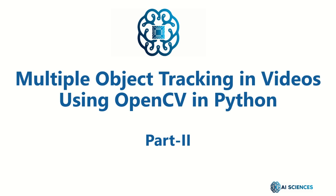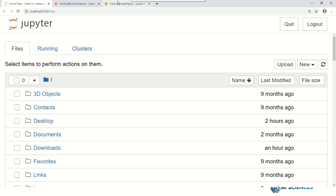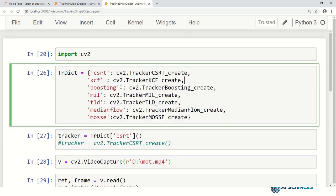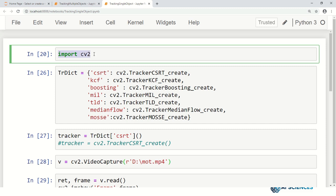Let's see the coding. It is much similar to how we track a single object with a little modification, so we'll be referring to the code from Part 1. We have the single object tracking code from the last video on the left, and here is the code we are going to write for multiple objects.